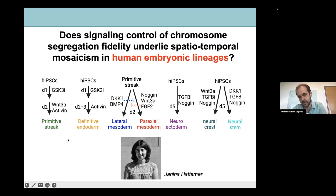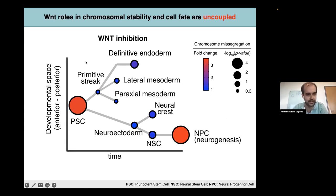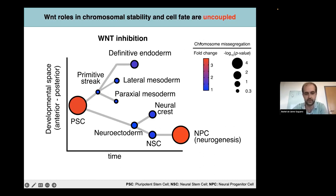We established, in collaboration with PhD student Janina Hatemer who did a really great job, several protocols to obtain primitive streak, definitive endoderm, lateral and paraxial mesoderm, neuroectoderm, neural crest, and neural stem cell-like cells. Here we were not so much focused on how morphogens and cell signaling directly impact cell fate, but rather what is the effect of this signaling in terms of genome stability in each lineage. Focusing on inhibition of basal WNT signaling with DKK1: pluripotent stem cells are actually really sensitive, increasing levels of chromosome missegregation, whereas the early lineages do not respond and this response fades down.